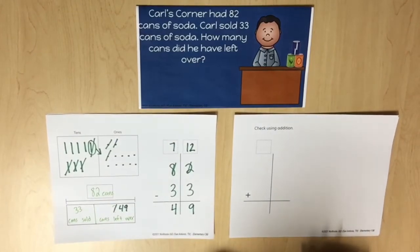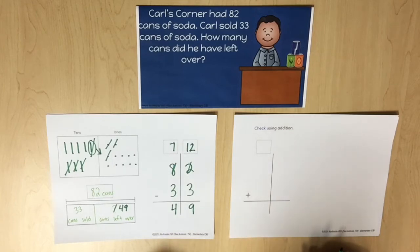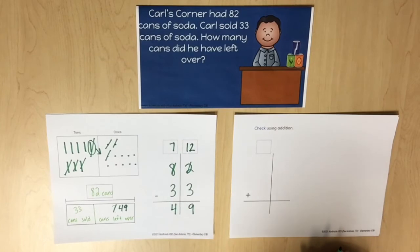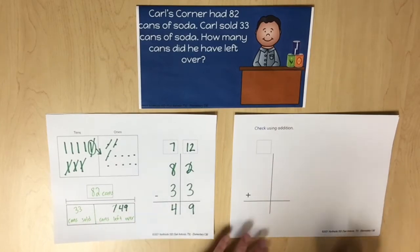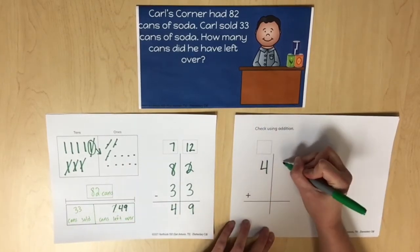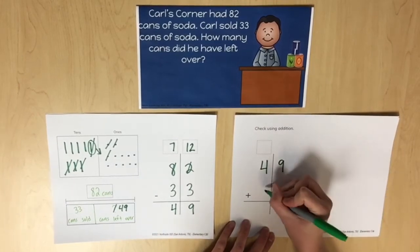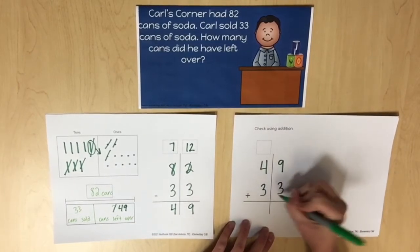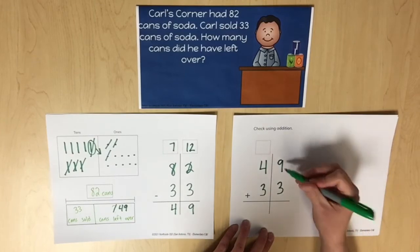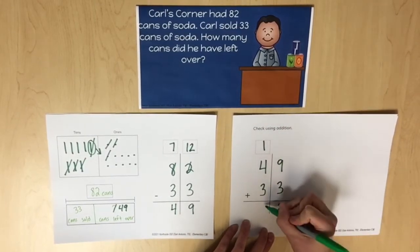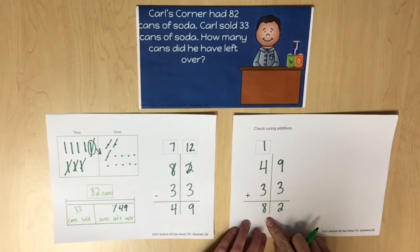Addition and subtraction are related. Students can use addition to check their subtraction work. To help students see this relationship, we can ask: what if we combined the number of cans of soda he had left with the number of cans of soda he sold? So we had 49 cans left, combined with the 33 cans he sold. When we combine that, the result is the number of cans he started with: 82.